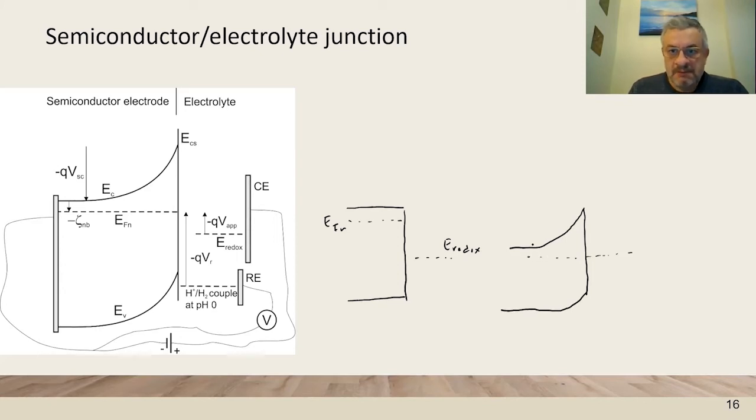When we bias this barrier for example by putting a negative voltage here then we will modify the height of the barrier in this situation of the applied bias.